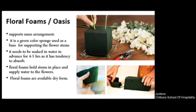Oasis floral foam is a green sponge-like structure available in flat arrangement work. Oasis plays a very important role and is an important ingredient and equipment. It is the object which supports the entire flower arrangement. In the market it is available in the form of a brick — dry and lightweight. This oasis needs to be soaked in water at least four to six hours before actual use so that it can absorb and retain moisture, which will in turn provide moisture to your plant material.